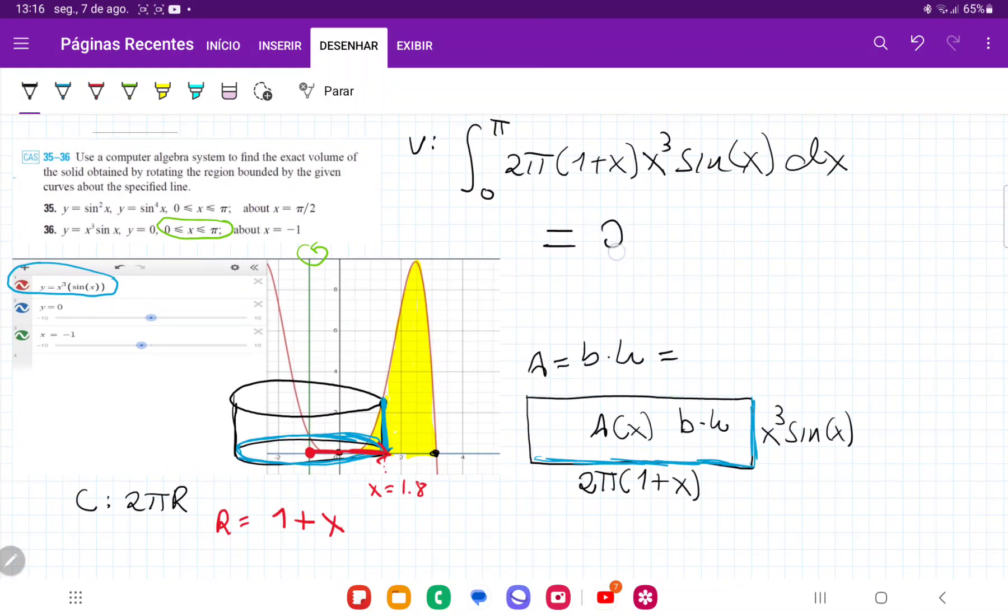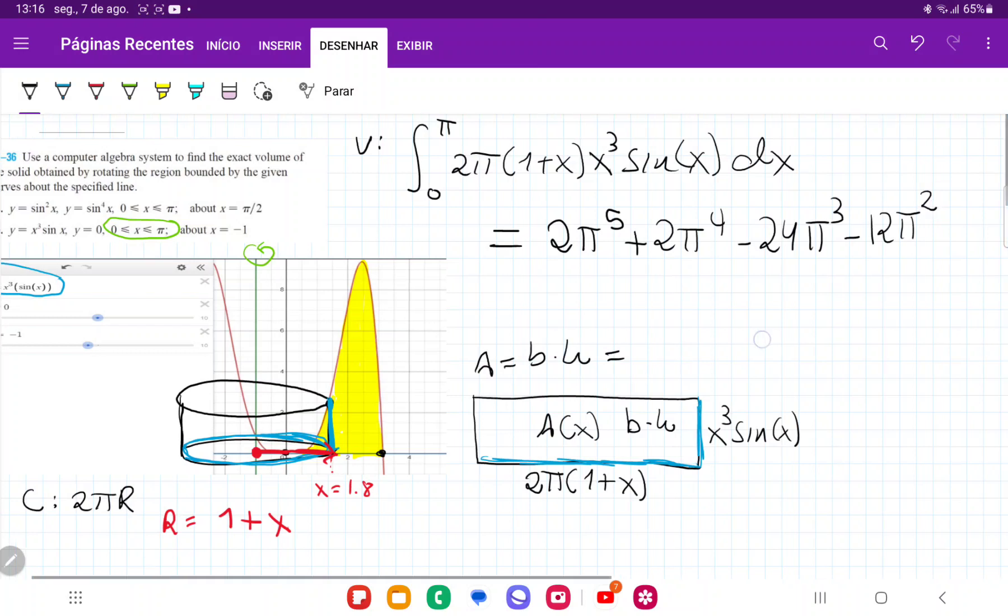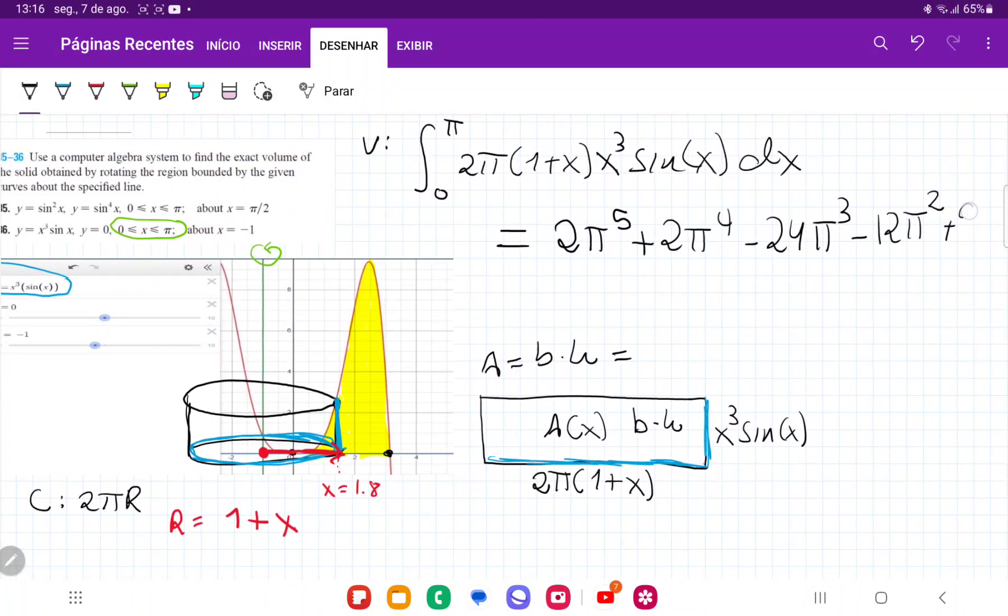If you just plug in this integral and then ask it to evaluate from 0 to pi, it's going to give you 2 pi to the power of 5 plus 2 pi to the power of 4 minus 24 pi cubed. And then that gives us minus 12 pi squared plus 96 pi. And that's what we get when we take this area and we revolve it about the line x is equal to negative 1.